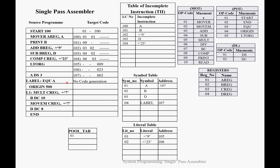Next is LABEL EQU A. For EQU and ORIGIN statements, we do not generate any target code. However, LABEL is a symbol, so we add it to the symbol table and assign it the address of A, which is 107. Next is ORIGIN 500 — again no code generation, but we reset our LC to 500. From the next statement onward, LC starts at 500.